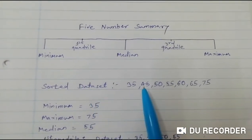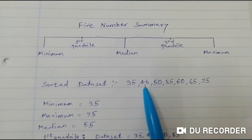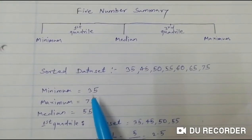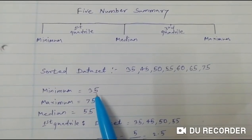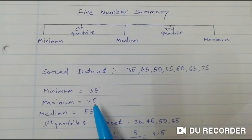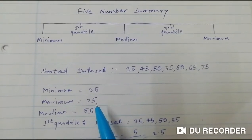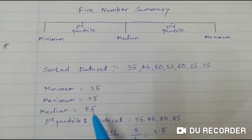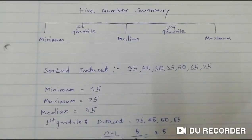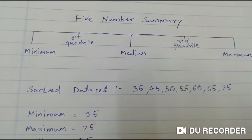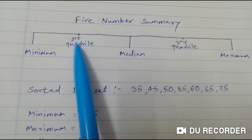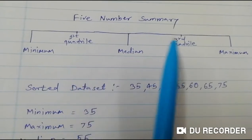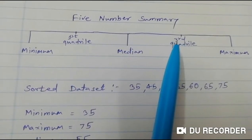This is our sorted data set, which we sorted previously. From that, we can easily get the minimum value, which is 35, and the maximum value, which is 75. The median we just calculated is 55. Now we will see how to calculate the first quartile and third quartile values.